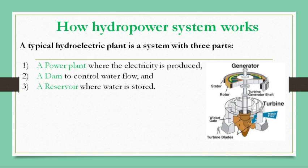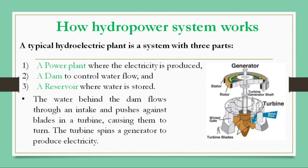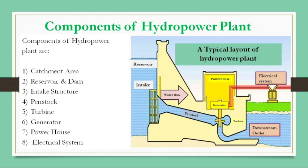A typical hydroelectric plant is a system with three parts: first, a power plant where the electricity is produced; then a dam to control water flow; and a reservoir where water is stored. The water behind the dam flows through an intake and pushes against the blades of the turbine, causing them to turn. The turbine spins a generator to produce electricity.